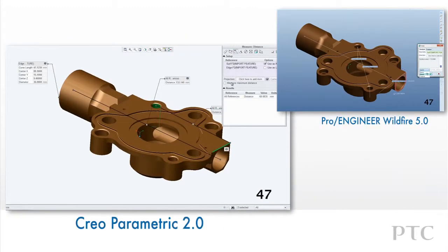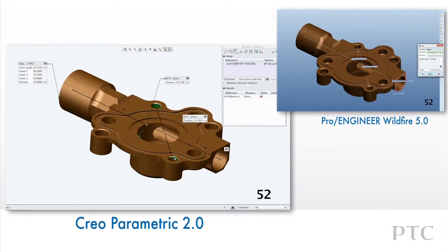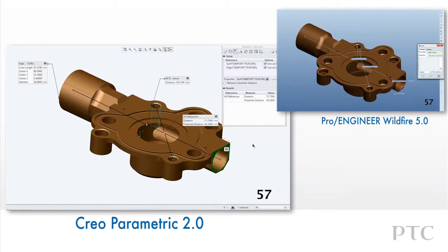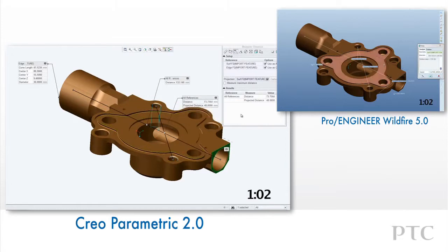With Creo Parametric, we can easily move from one measure function to the next. If we want to refine the type of measure function we want to use, we can simply select a function in the measure dialog. In this case, we can specify we want to measure area, without having to close out the dialog and restart a new function. A real time saver!